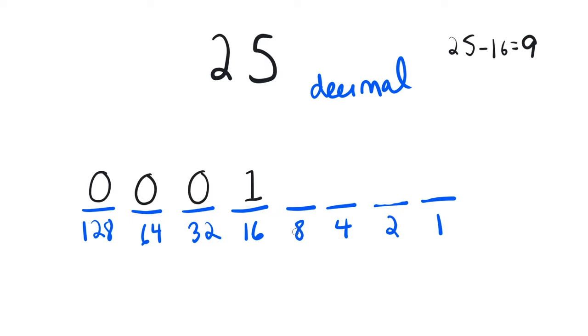The next place value is the 8th place. 8 is not greater than 9, so that means we are going to need to use the 8th place. We'll put a 1 in there, so now we have 9 minus 8 equals 1.